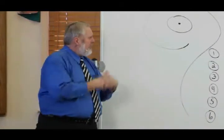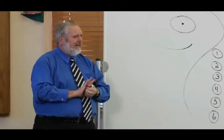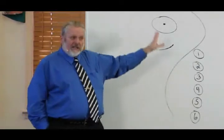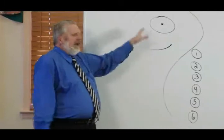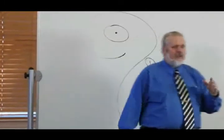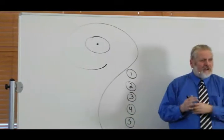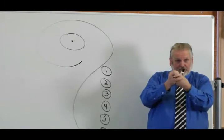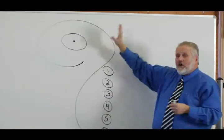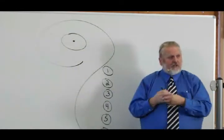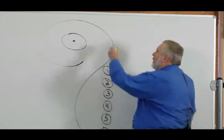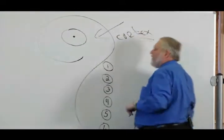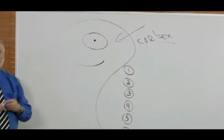If you've never been with me before, you're going to find out fairly quickly that my artwork leaves a lot to be desired, so you have to use your imagination. If you take the human brain and cut it in half, it doesn't look a whole lot like this, but it kind of gets the point across. The brain, if you slice it in half, has been compared to cutting an onion in half — the outer layers are large, and the closer you get to the center the smaller and more compact they are.